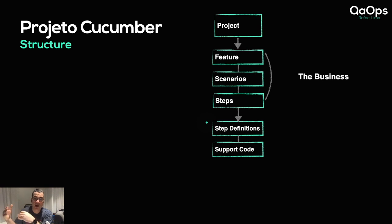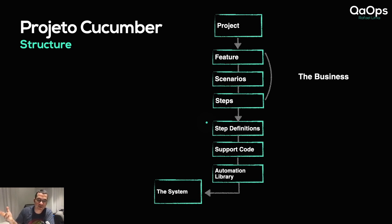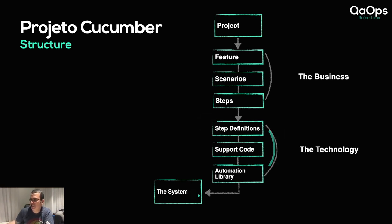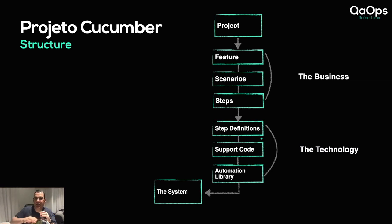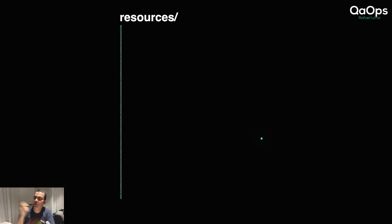My page object is an abstraction of how I'm going to communicate with the page. Then I'm going to have my automation library — my page object is going to use Selenium, my API structure is going to use REST Assured or anything else. This is the technology layer. So on one side we have the business, then the system itself, and then the technology we are using — that's my project in a holistic view.